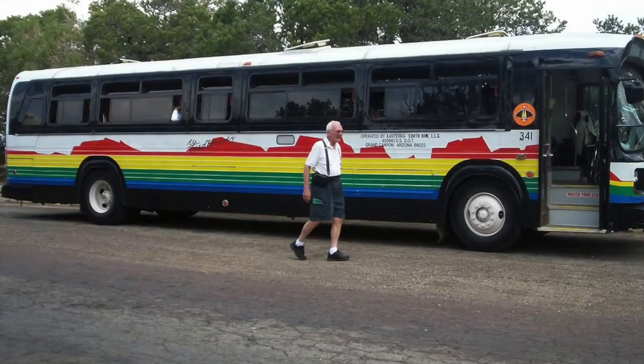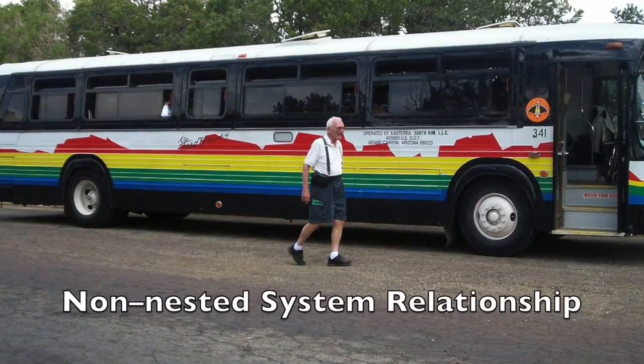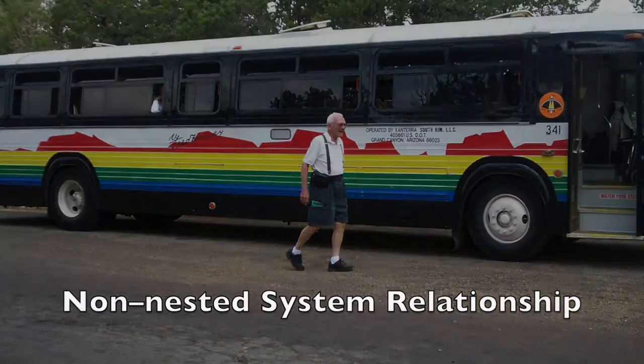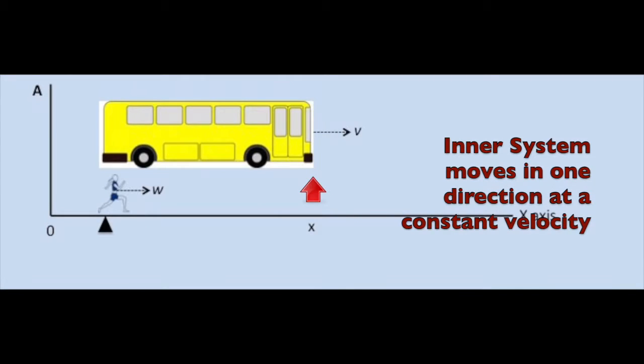I begin by placing the bus and the man on the street, forming a non-nested relationship. Now we put the bus in motion from left to right in a constant velocity.